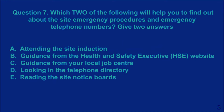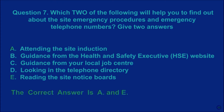Question 7: Which two of the following will help you to find out about the site emergency procedures and emergency telephone numbers? Give two answers. A: attending the site induction. B: guidance from the Health and Safety Executive (HSE) website. C: guidance from your local job centre. D: looking in the telephone directory. E: reading the site notice boards. The correct answer is A and E.